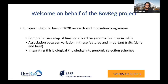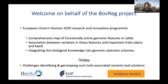As you all know, this is organized as part of outreach activities of a project funded by the European Union's Horizon 2020 research and innovation program. The goal of this project is to create a comprehensive map of functionally active genomic features in cattle, and more importantly to study the association between variation in them and variation in important traits — both dairy and beef. The ultimate aim is to integrate this biological knowledge into genomic selection schemes, and today we hope to discuss some of the challenges and possible solutions in identifying and large-scale genotyping such trait-associated variants.